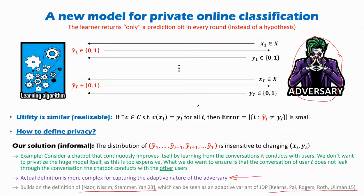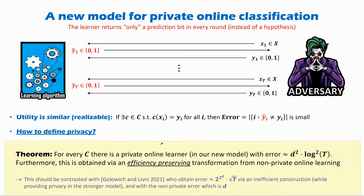So in this new model for private online classification, we show an efficiency preserving transformation from non-private online learning to private online learning, where the error is only d² · log²(T), which is better than 2^(2^d) · √T. That's it. Thanks.